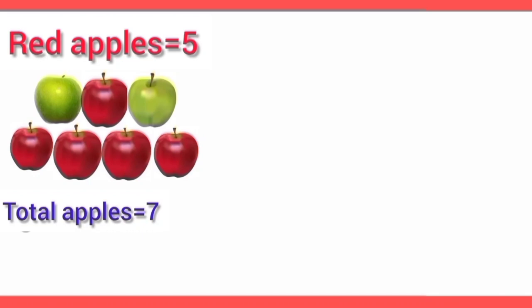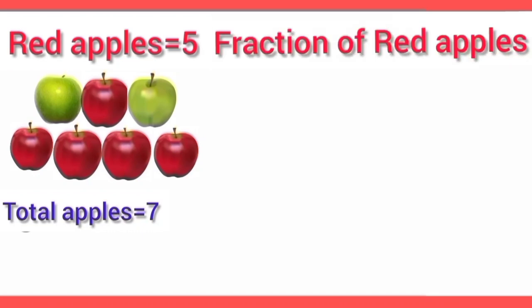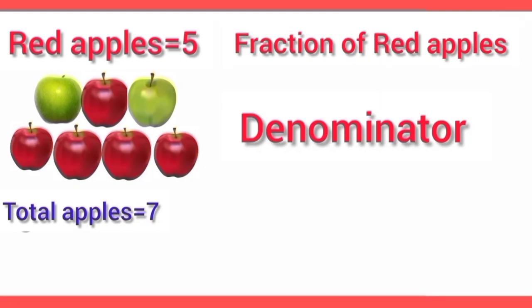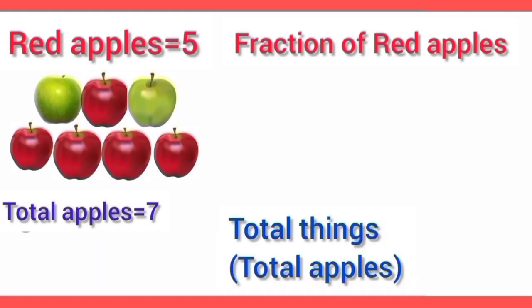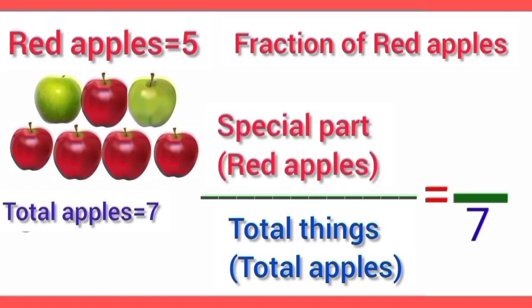The total number of apples is 7 and the red apples are 5. So dear students, let's find out the fraction of red apples. First of all, we will find the denominator. Total things or quantity of a group is known as denominator. Here, total apples are 7. So, 7 is the denominator, and the special part of the whole is red apples.